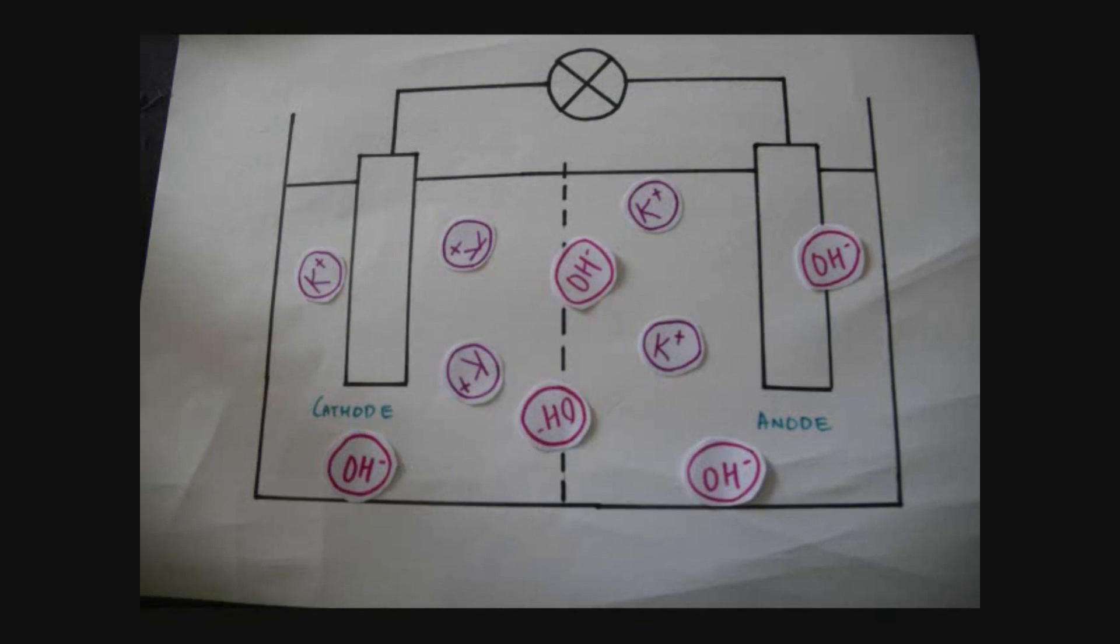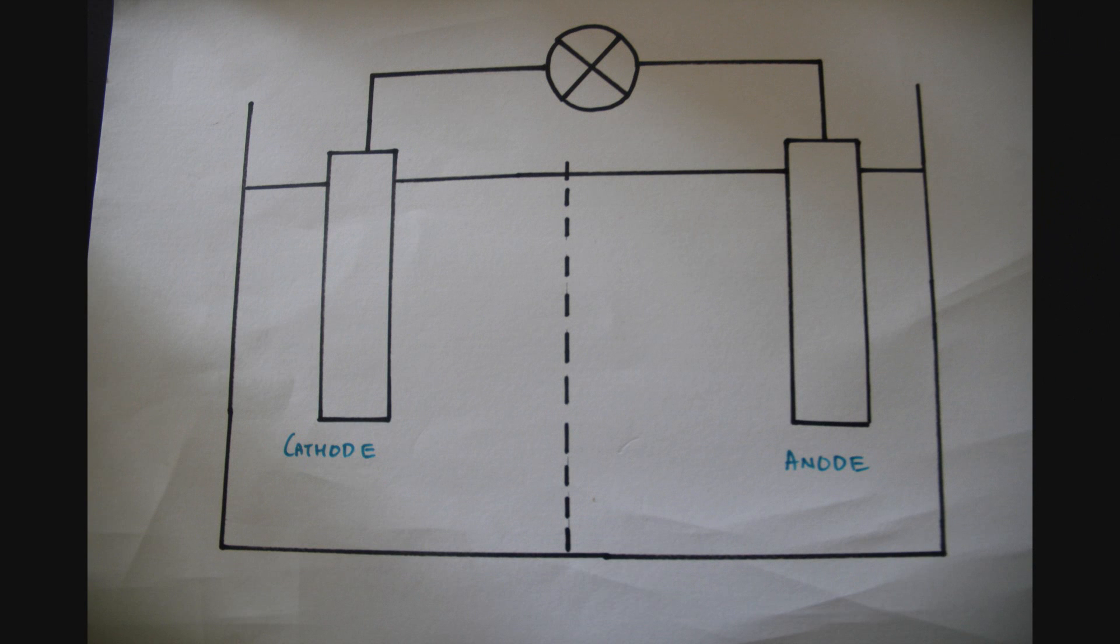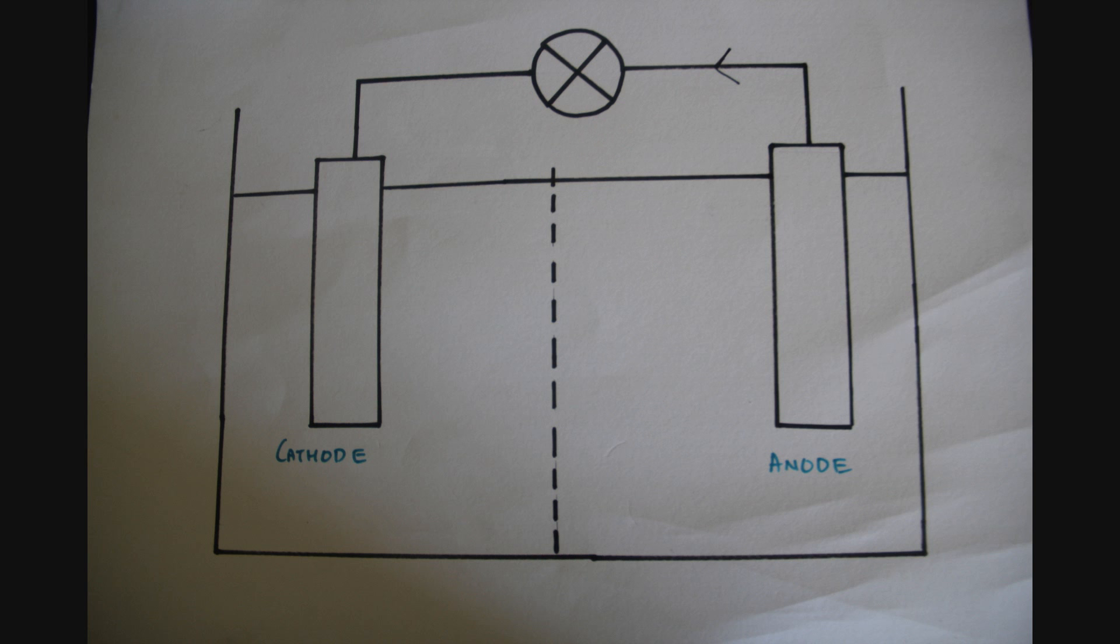Electrolytes dissociate to form cations and anions, allowing electricity to flow. In batteries, there are barriers or separators to prevent contact between each electrode, while allowing electric charge to flow freely between them. When a load, like a light bulb, completes the circuit between the two terminals, the battery is discharging, producing electricity through a series of electrochemical reactions between the anode, cathode and electrolyte.